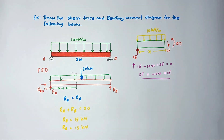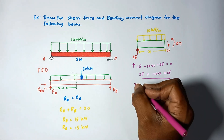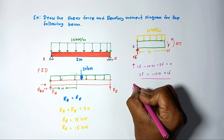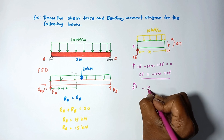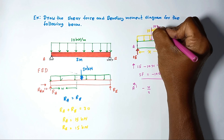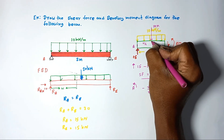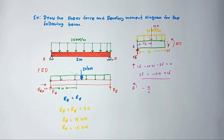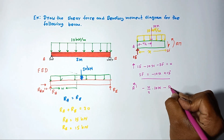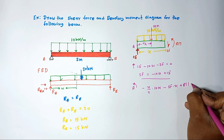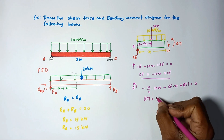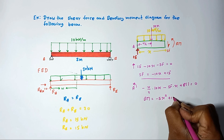Similarly, we can obtain the equation for the bending moment by taking the moment about the cut point. The resultant of the distributed load over length x is 10x, acting at a distance x divided by 2 from the cut. Taking moments: minus 10x times x over 2, minus V times x, plus M equals zero. Making M the subject gives the bending moment equation M equals negative 5x squared plus 15x.